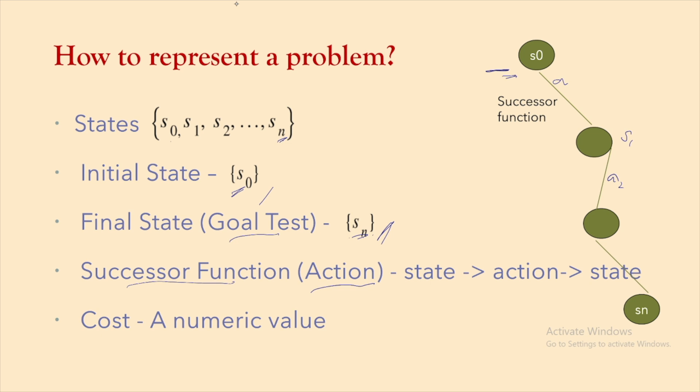In Russell and Norvig, this is called a transition between states. The fifth metric is cost — what is the cost for moving from one state to another? In this module and the next, we will have the cost as 1, and when we go into heuristics we will have costs associated with that. Typically, we define a problem using five structures: state, initial state, final state, successor function, and cost.